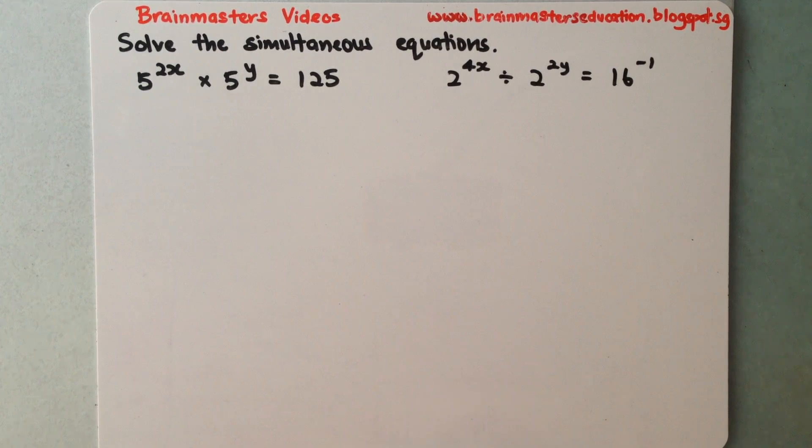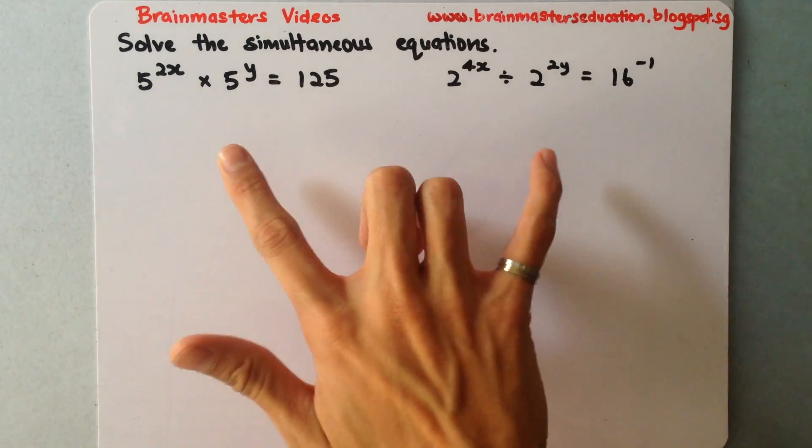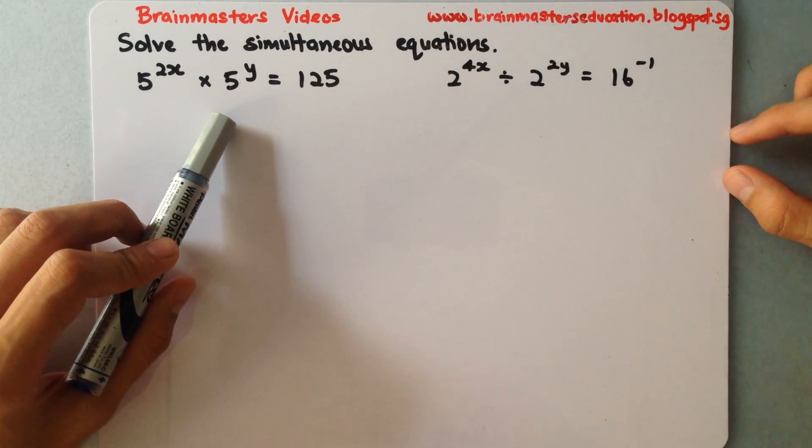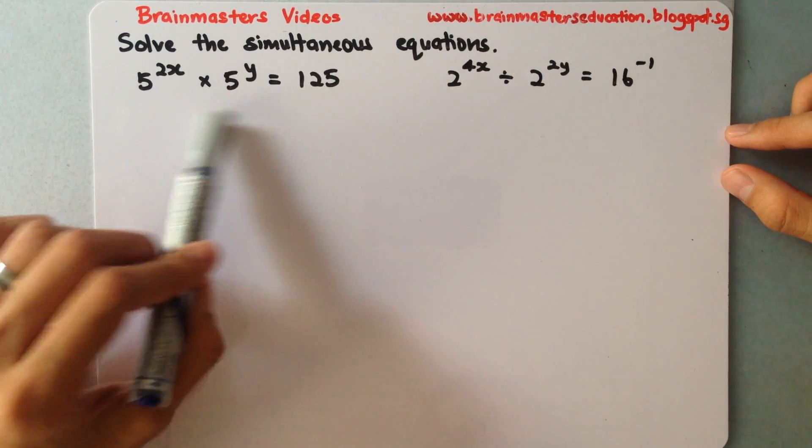So for this, the question given to me is to solve the simultaneous equation. I have two equations here, where 5 to the power of 2x multiplied by 5 to the power of y equals 125. This is the first equation given to me.